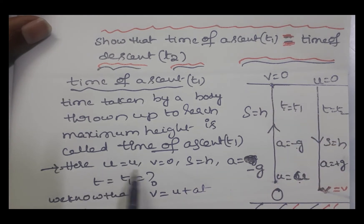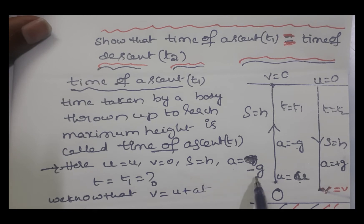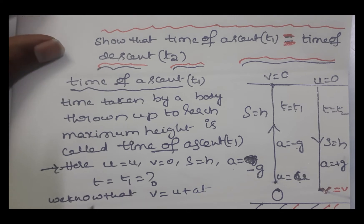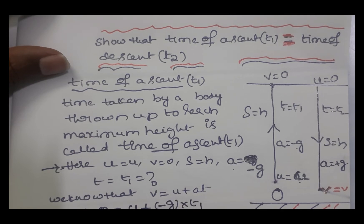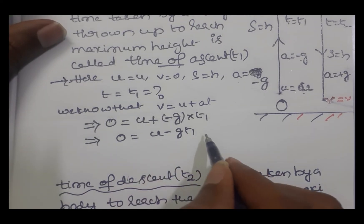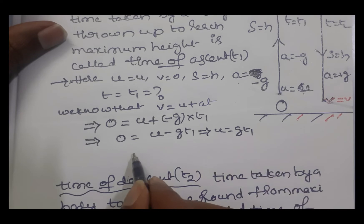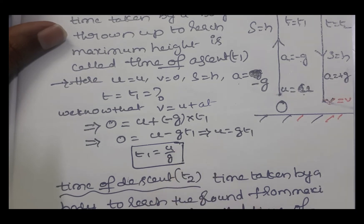Here, initial velocity is u, final velocity v is zero, displacement is the maximum height h, and acceleration is -g. We want to derive the formula for time of ascent. Using the first equation of motion, v = u + at: substituting v = 0, a = -g, and t = t1, we get 0 = u - g·t1, which gives u = g·t1, therefore t1 = u/g. This is the formula for time of ascent.